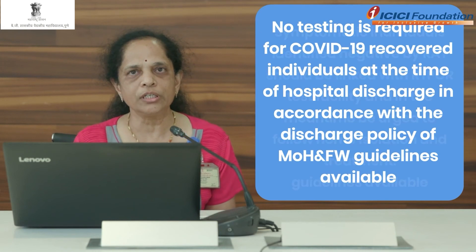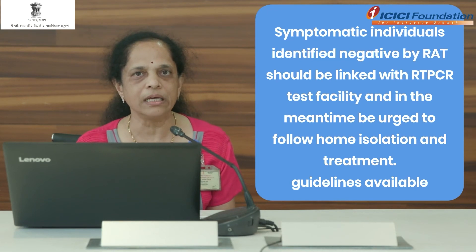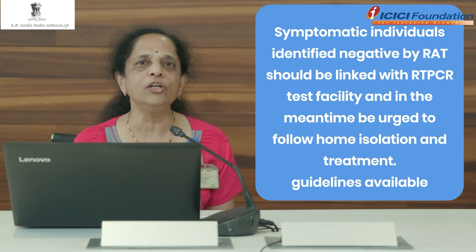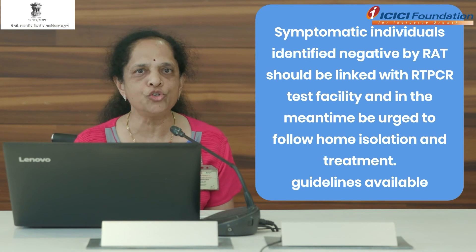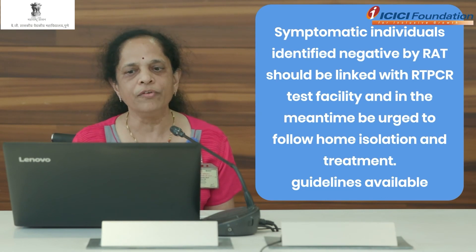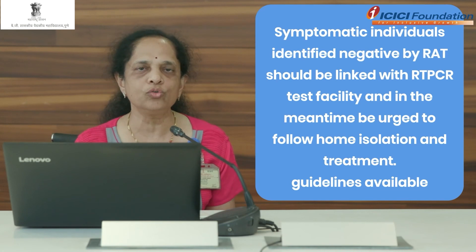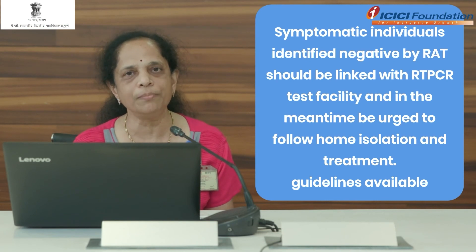For symptomatic individuals identified as negative by rapid antigen test — symptoms are present but RAT came negative — there is a possibility the person has a low viral count or low viral load. To confirm they are truly negative, ICMR guidelines recommend that an RT-PCR test should be done. In such cases, a second swab should be collected and sent for RT-PCR testing.